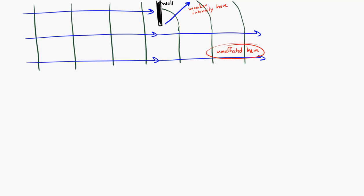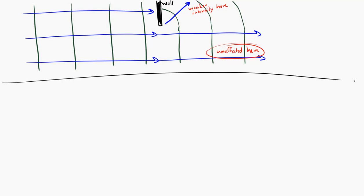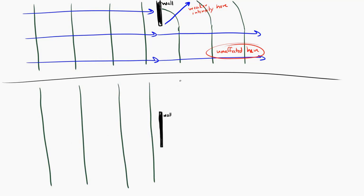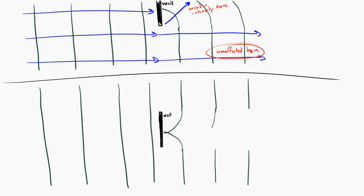Now let's look at a third example. Let's say that I just have this little bit of wall right here and the waves are coming in. The waves which are not near the wall will just pass straight on through. But the waves that pass near the wall will be bent — they'll be diffracted around the edge.